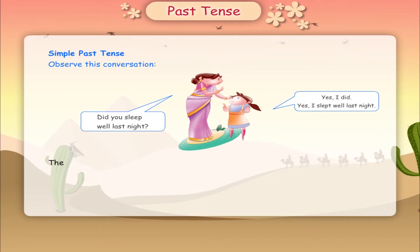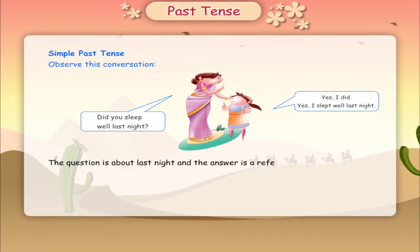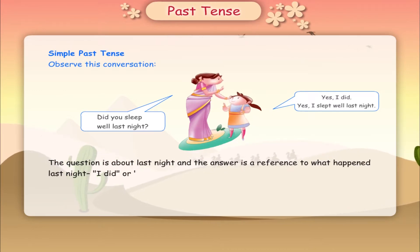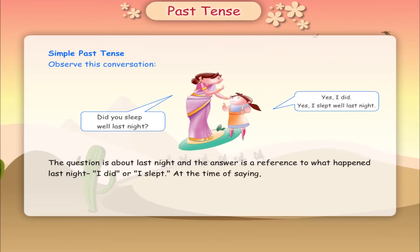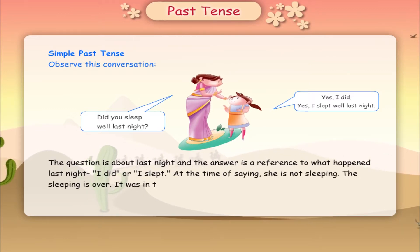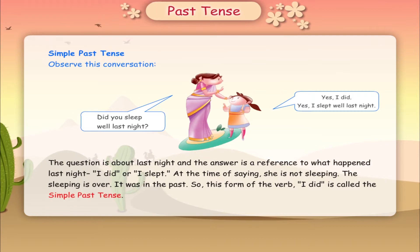The question is about last night and the answer is a reference to what happened last night. I did, or I slept — at the time of saying this, she is not sleeping. The sleeping is over. It was in the past. So this form of the verb, I did, is called the simple past tense.